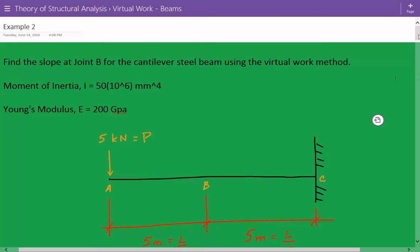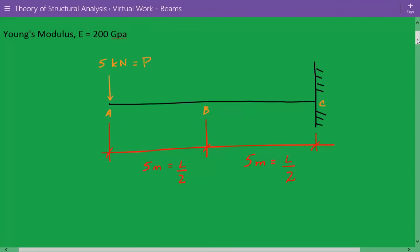So here's our cantilevered beam, and we have a concentrated load at joint A at the free end, point A, equal to 5 kilonewtons, which we'll call P. And the total length is equal to 5 meters plus 5 meters, that's 10 meters, and we'll call that L. And we need to find the slope at the midpoint B.